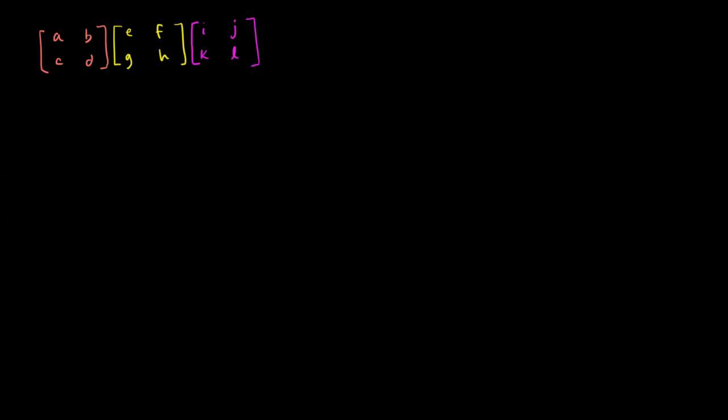And I want to look at two scenarios. So I want to look at the scenario where first I multiply the orange and the yellow matrix and then I multiply that times the purple matrix.